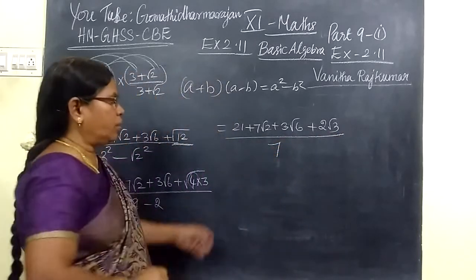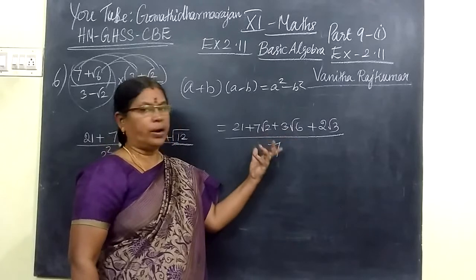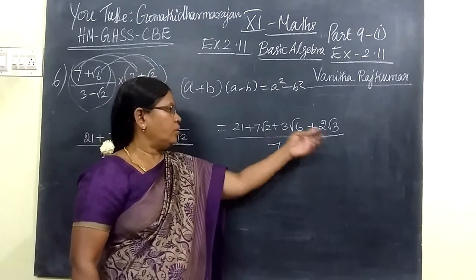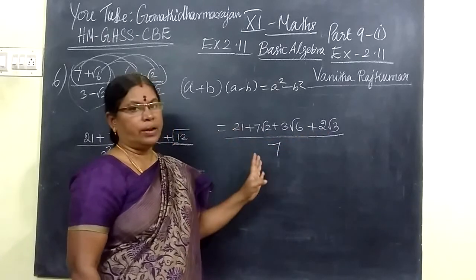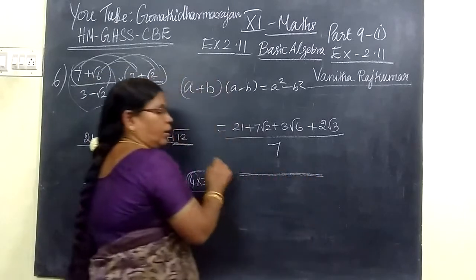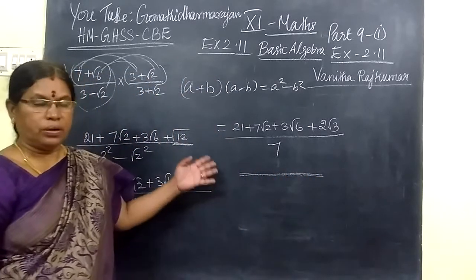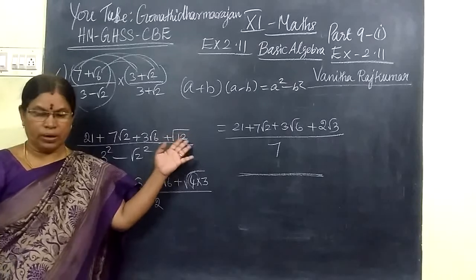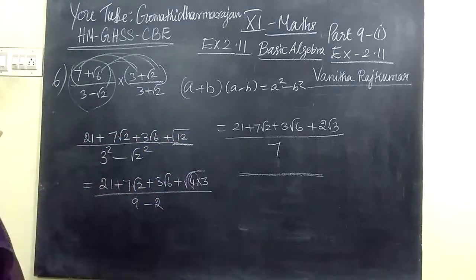Then denominator 7. So these are now unlike terms. We are going to unlike terms, we can't add it. Like here also unlike terms. So this is the answer I take. Every time we have to take the answer with a textbook. So that is why I made a mistake.